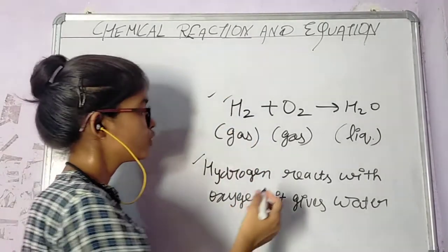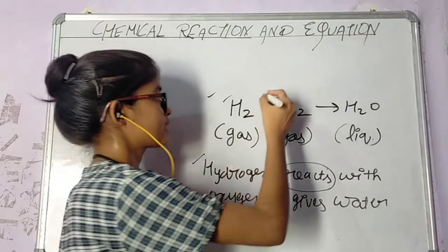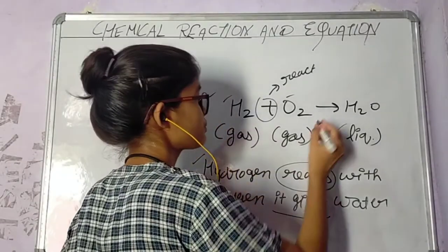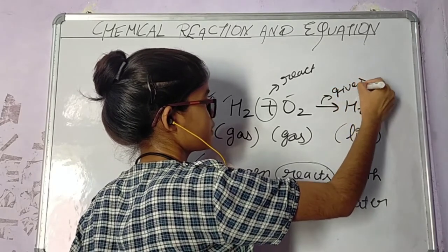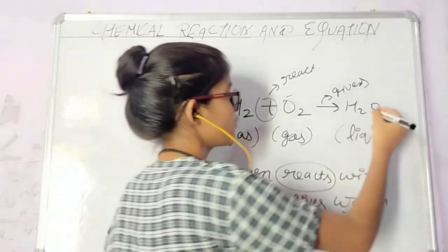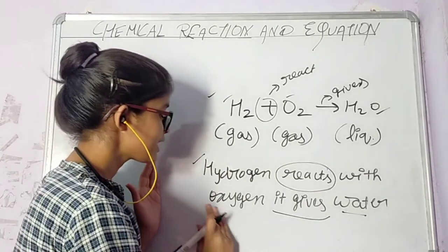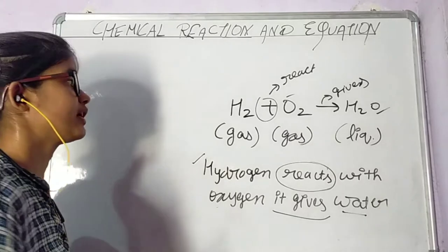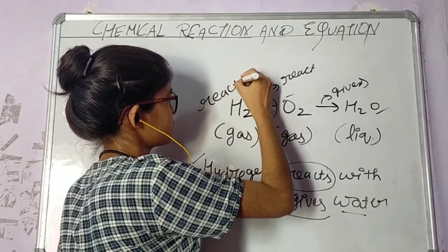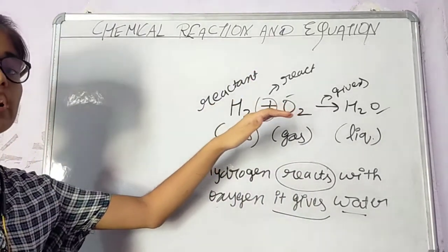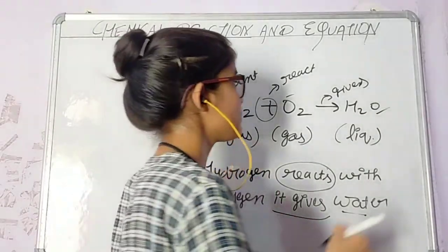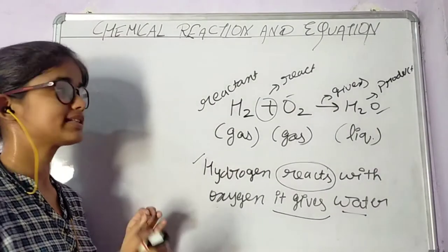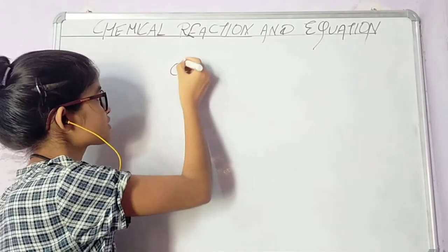In symbolic form, hydrogen H2 reacts with — we represent 'reacts with' as a plus sign — oxygen O2, and the arrow represents 'gives', yielding water H2O as the product. In chemistry, we call hydrogen and oxygen the reactants, and H2O the product. This is the simple rule for representing a chemical equation.